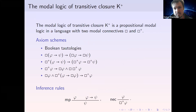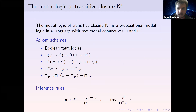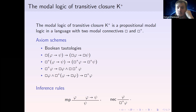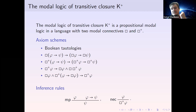This system called K-plus is a logic in a language with two modal connectives: box and box-plus. Here we see a list of axioms and inference rules — Boolean tautologies, axioms which tell us that both connectives are normal, and two final axioms which I will explain in terms of semantics on the next slide. We also see standard inference rules: modus ponens, the necessitation rule, and another necessitation rule for the second connective, while the one for the first modal connective is derivable.